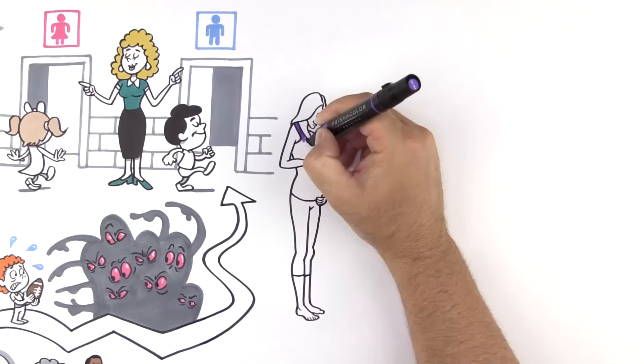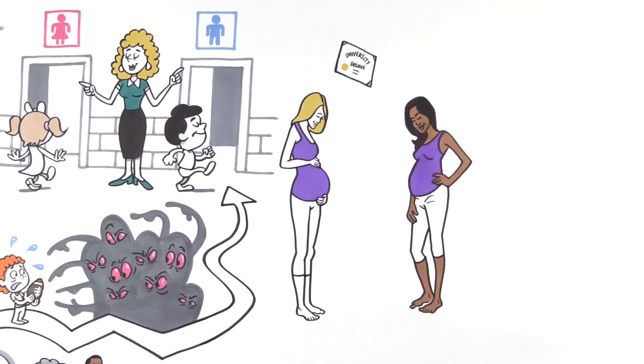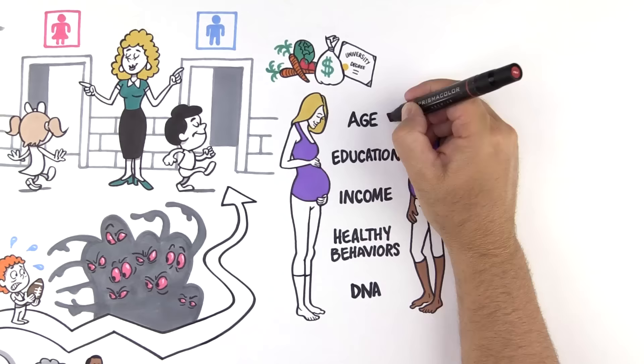Inequality touches all parts of our lives, even when we're thinking of starting a healthy family. We assume that education, income, and healthy lifestyles should produce the same healthy birth outcomes regardless of race in the U.S. Yet research indicates that regardless of age, education, income, and healthy behaviors, and unrelated to genetics, black women in the U.S. have poorer birth outcomes than their white counterparts.